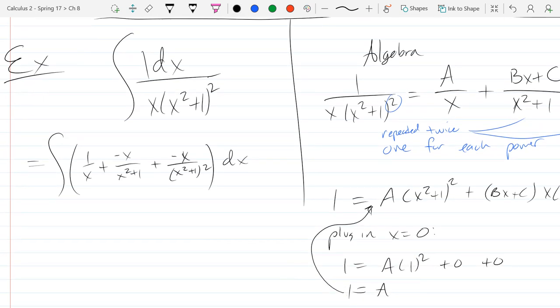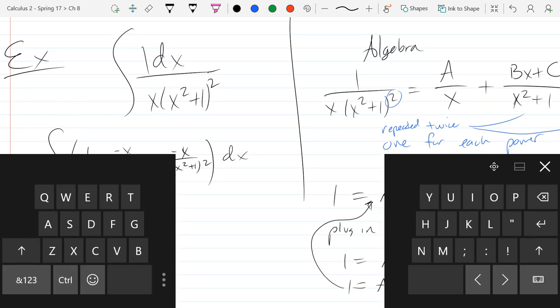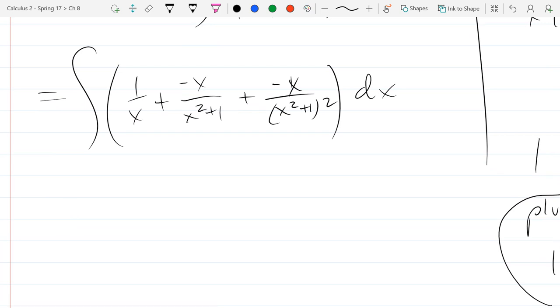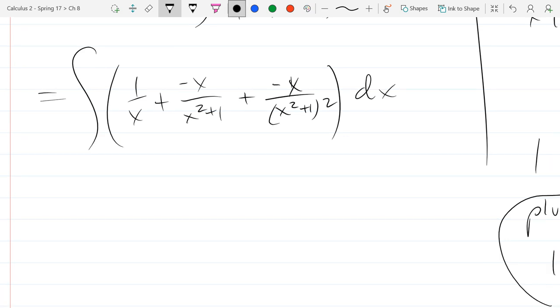That was a large majority of the actual work to integrate this. We've expanded this out. The first one is super easy, 1 over x. What's the anti-derivative of 1 over x?